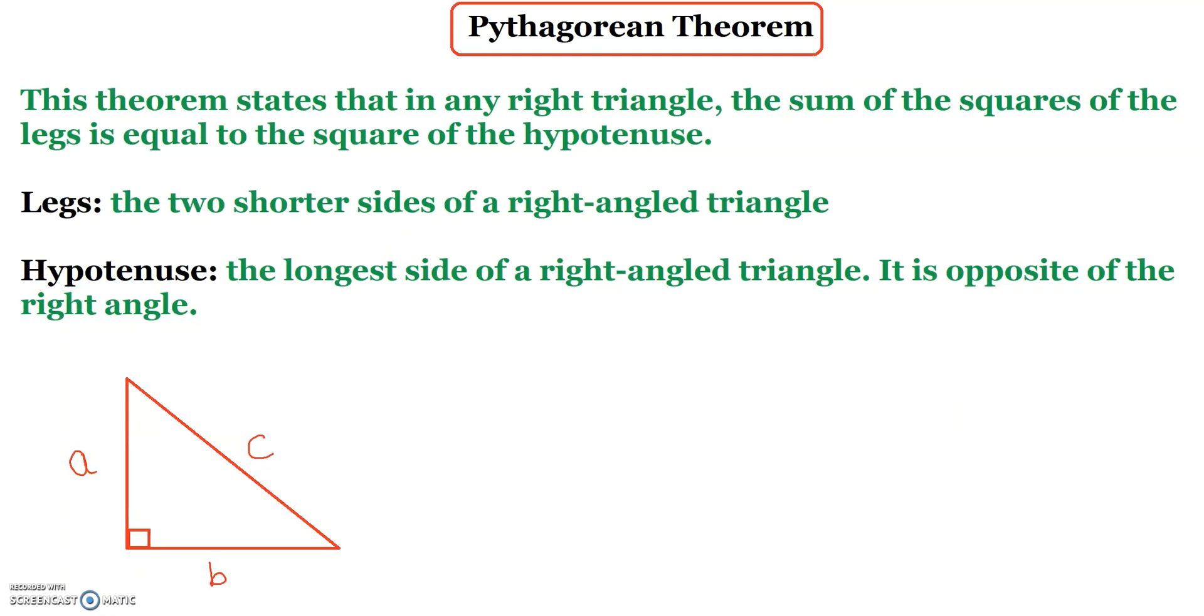In this video I will talk about Pythagorean theorem. This theorem states that in any right triangle the sum of the squares of the legs is equal to the square of the hypotenuse.